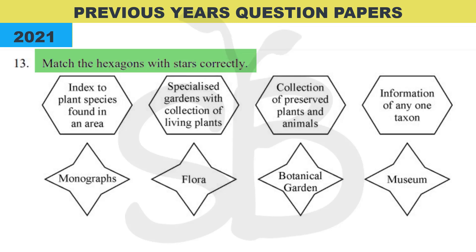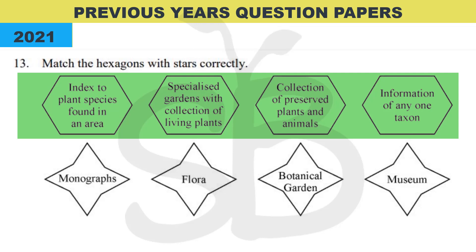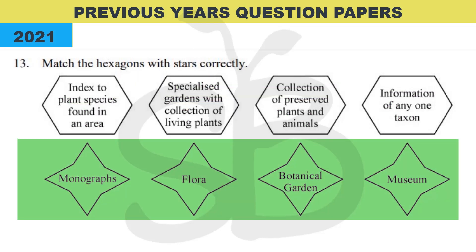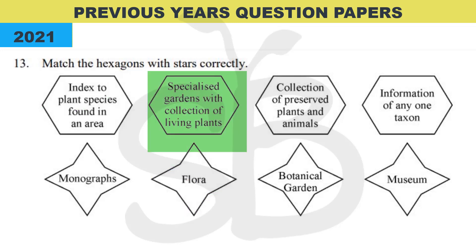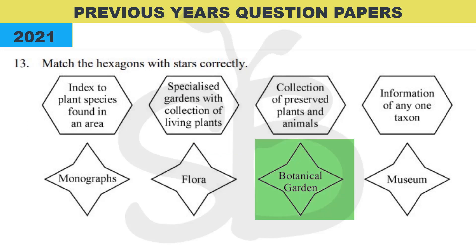The first question from the 2021 annual exam is a match-the-following. It is one of the simplest questions. The first item is 'indexed plant species found in an area' — this is related to plant species, so the answer is Flora. The second item is 'specialized gardens with collection of living plants' — this is about a garden, and the correct answer is Botanical Garden.